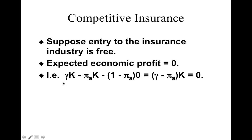Notice how we've written the profit function — it is conditional on the accident happening and no accident happening. Just as consumption is state contingent, profits are also state contingent. Given that economic profits are zero, we equate to zero. Since the no-accident payout is zero, that term drops out, leaving us with: (γ − πa) × k = 0.